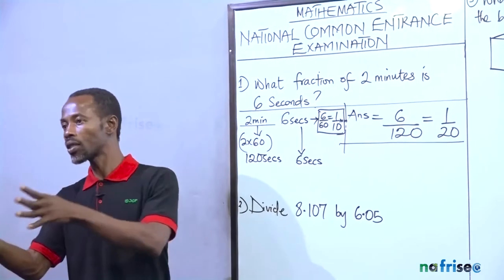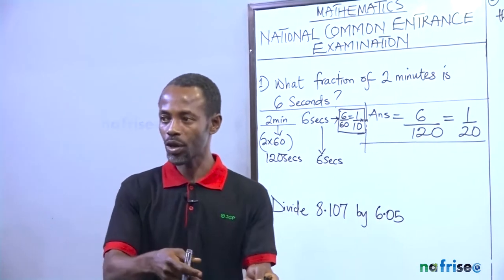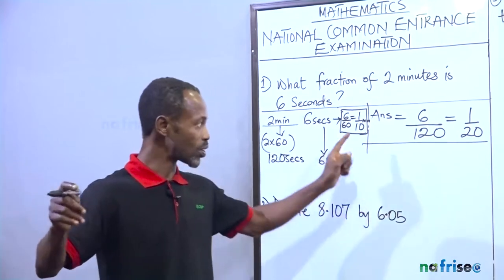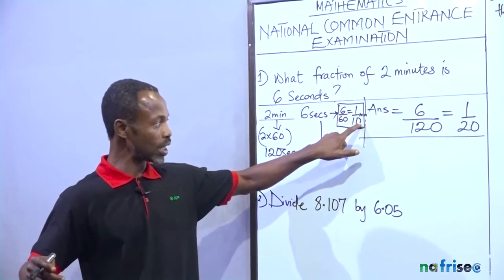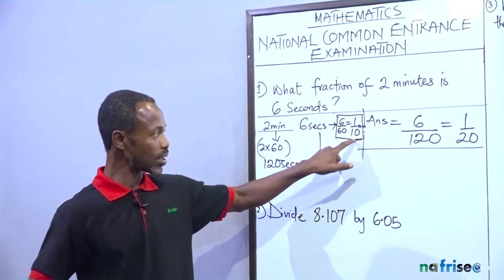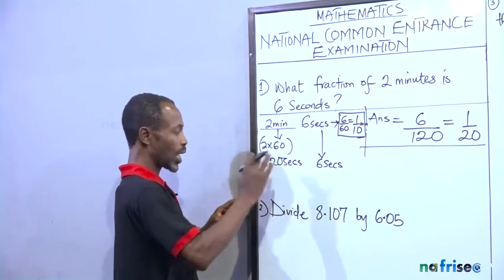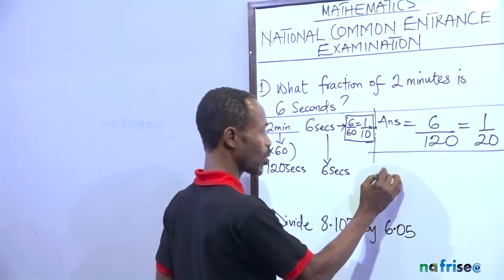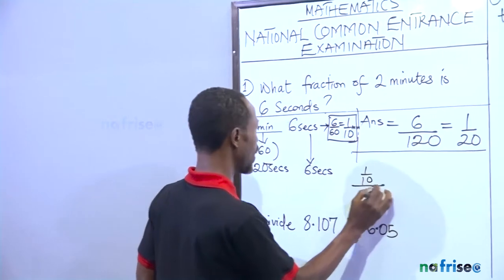But if, for instance, you decide to change your seconds to minutes now, so 6 seconds becomes 6 over 60 because 60 seconds make 1 minute. So we have 1 over 10 what? Minute. 6 seconds is 1 over 10 minutes. So you can now take it like 1 over 10 divided by what? 2.